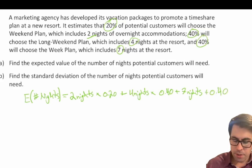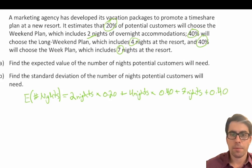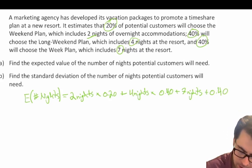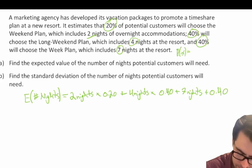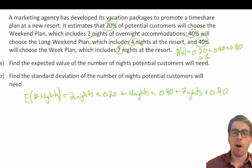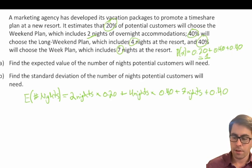As a quick check to make sure we have all our observed values of x, let's sum up the probabilities: 0.20 plus 0.40 plus 0.40 equals 1. So we're confident that we have all our observed values of x included in our estimation for the number of nights.